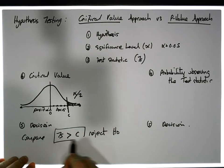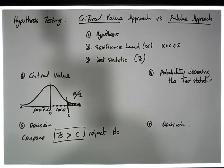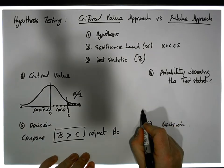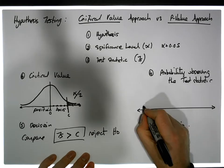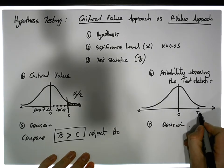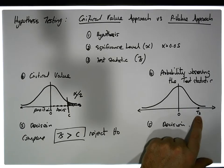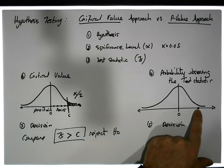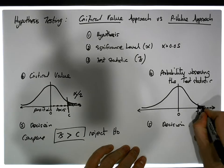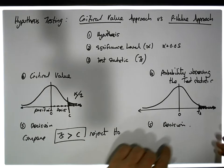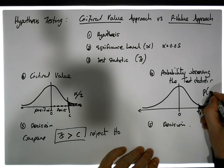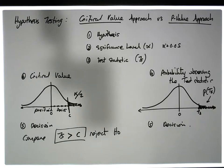We reject if the test statistic is bigger than the critical value. The other way to do this is to ask: what's the probability of observing the test statistic? Here's our curve, and the test statistic is somewhere along this axis. To calculate the probability of observing a test statistic as extreme as this one — out to infinity — we calculate the area under the curve to its right-hand side. That area represents the probability of observing a test statistic as extreme as the one observed.